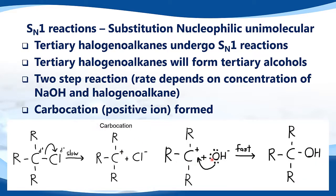In the second step, we have the hydroxide ion, which is the nucleophile. It's attracted to the carbon because the carbon is now a positive ion. You draw a curly arrow, and the curly arrow must go from the pair of electrons on the oxygen atom to where the bond will be formed. Then the OH joins with the carbon, giving us a tertiary alcohol.